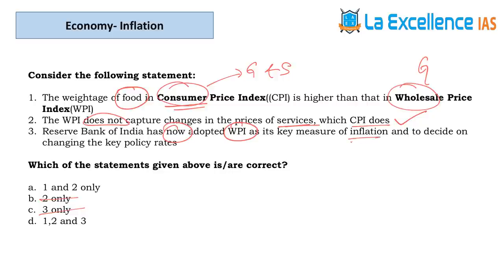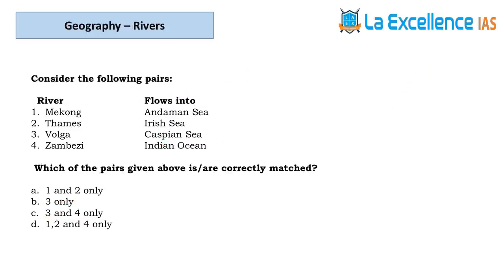Statement 3 — RBI has now adopted WPI as key measure of inflation. Inflation is measured to decide policy rates — this should reflect day-to-day consumer level changes, not wholesale level. When consumers have more money they tend to buy more, so CPI is the important inflation measure, not WPI. Statement 3 is wrong; answer is A or B depending on what's available.